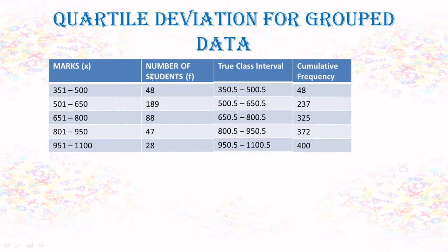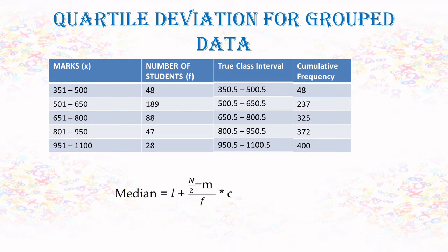The first step is to check whether the class intervals are exclusive or inclusive; if inclusive, convert to exclusive. For this example the inclusive class range was converted to exclusive. Next we calculate the cumulative frequency, which is the sum of the frequency of that class with all previous classes. For the first class, write the frequency directly; from the second class onward, keep adding the frequencies. The last value in cumulative frequency represents the total number of observations.